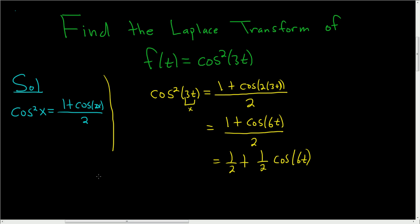I think now we're ready to take the Laplace transform. So the Laplace transform of the cosine squared of 3t, we already worked it out. We know that the cosine squared of 3t is equal to 1 half plus 1 half cosine 6t. So the Laplace transform is linear, so we can write this as 1 half Laplace of 1 plus 1 half Laplace of cosine of 6t.